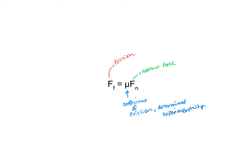There are actually two coefficients of friction: the coefficient of static friction and the coefficient of kinetic friction. The coefficient of static friction, which is mu sub s, is the coefficient of friction for an object that is not moving. The coefficient of kinetic friction, on the other hand, we use to figure out the force of friction for moving objects.